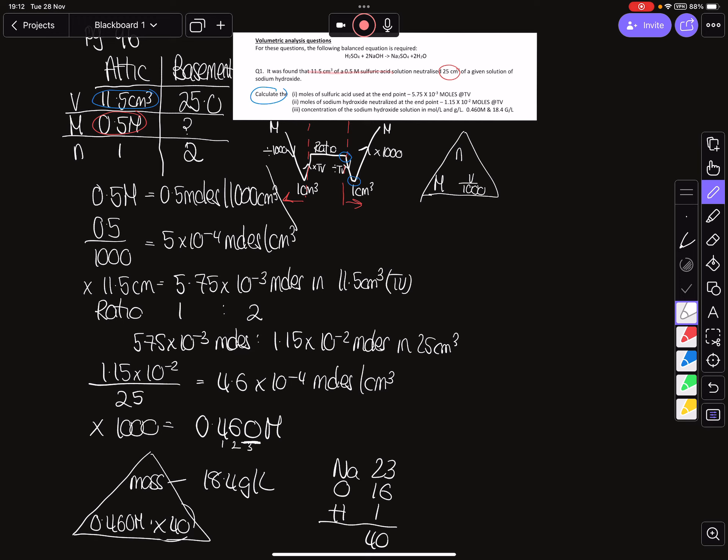So it asked for part i, moles of sulfuric acid at our end point. So our moles of sulfuric acid at our end point is what we had in our attic, so this would be the answer to part i if you're going to annotate it. It then asked what was your moles of sodium hydroxide - this is after we've used our ratio, so this now becomes two. It then asked you to calculate your sodium hydroxide concentration in moles per liter.